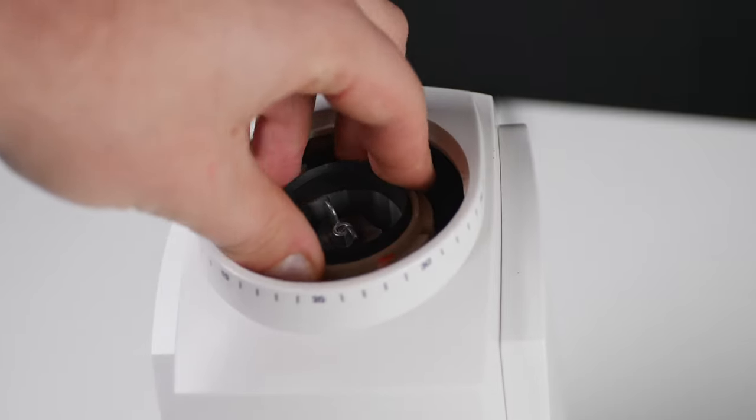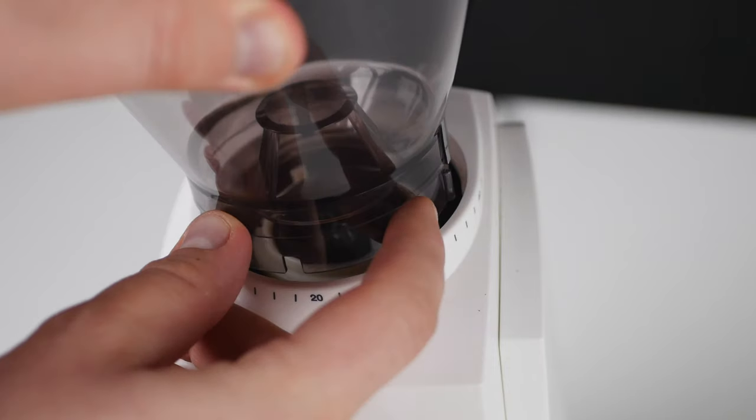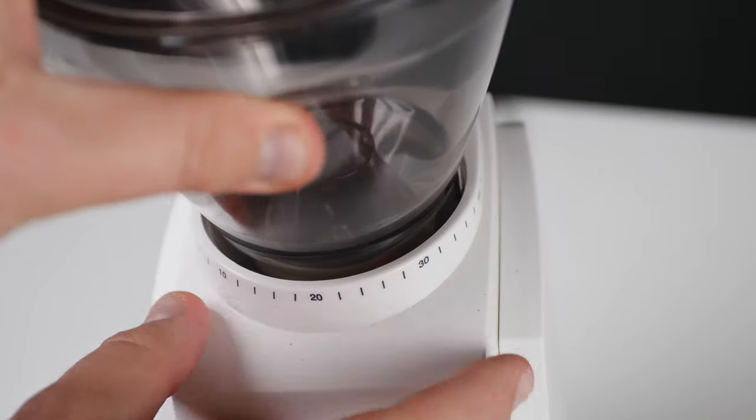Finally, install the hopper by aligning the silver tab with setting 40, then rotating clockwise to your desired setting.